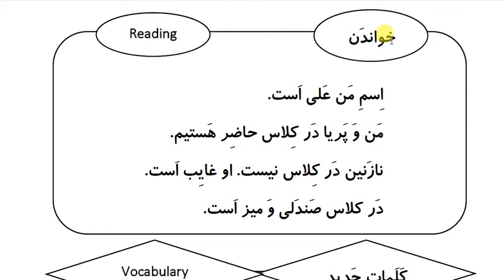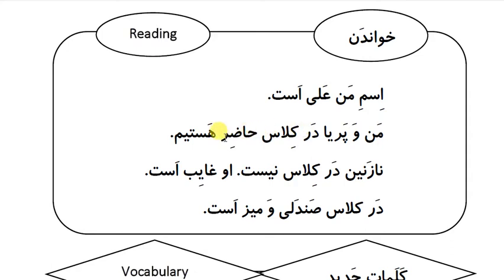خاندن. خاندن means reading. اسم من علی است. Ali is a common name in Iran for boys. من و پریا — پریا is a common name for girls in Iran. در کلاس حاضر هستیم. من و پریا در کلاس حاضر هستیم.